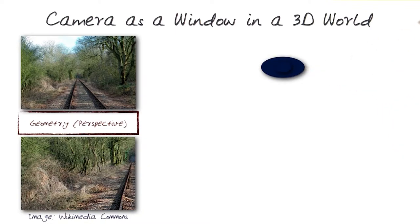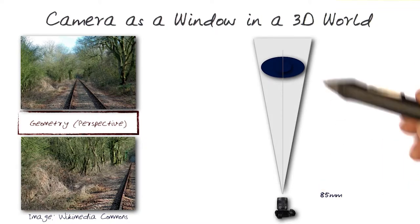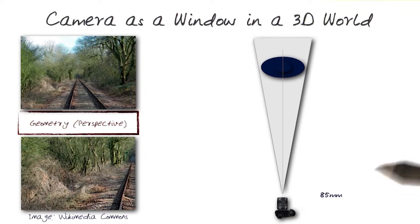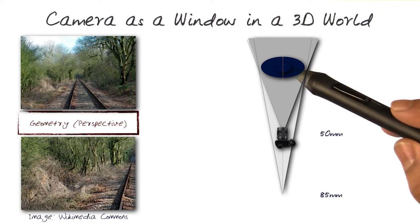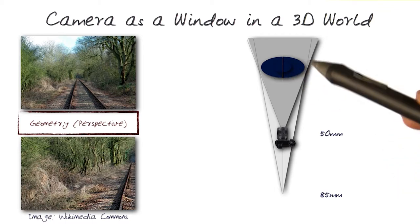So imagine this is my subject, and my camera is here. I'm focused on the subject, except now this is my field of view from an 85mm lens. I can move closer, use a 50mm lens, and still capture approximately the same details of the same subject.